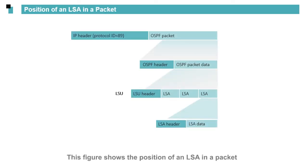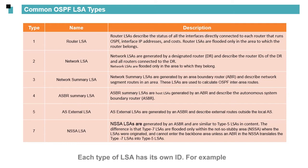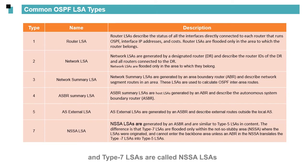This figure shows the position of an LSA in a packet. This slide shows common LSA types that we need to get familiar with. Each type of LSA has its own ID. For example, Type 1 LSAs are called Router LSAs and Type 7 LSAs are called NSSA LSAs.